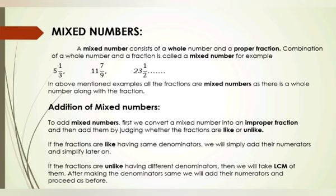Here are three examples of mixed numbers displayed on the screen: the first one is 5 and 1/3, then 11 and 7/9, and 23 and 1/2. Each of these has a whole number part and a proper fraction part, which is why they are called mixed numbers.